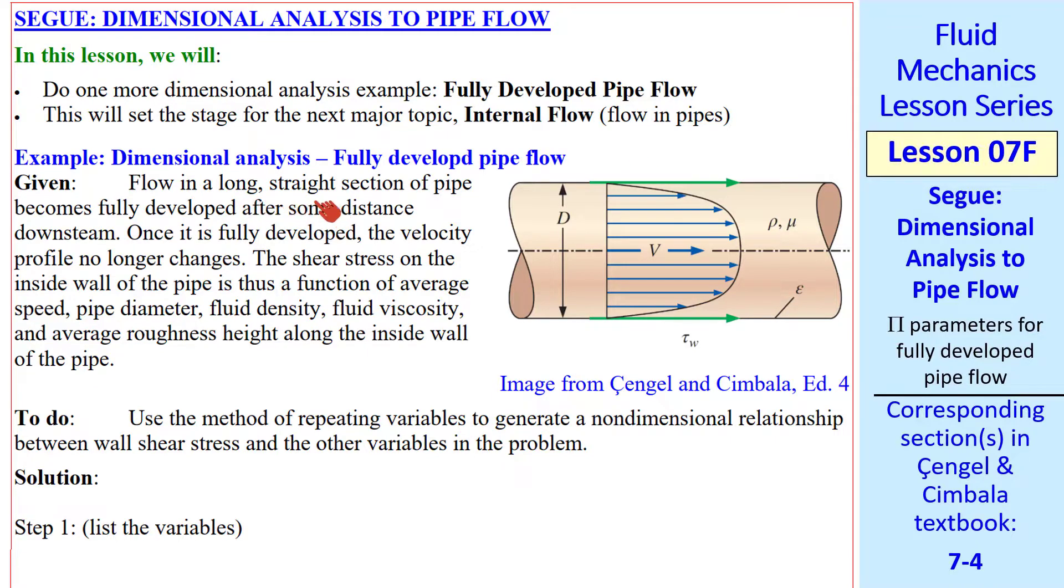Here's the problem set up. We're given a long straight section of pipe that's fully developed after some distance downstream. Once it's fully developed, this velocity profile stays the same from then on downstream. Shear stress tau w on the wall is thus a function only of average speed v, pipe diameter d, fluid properties rho and mu, and also the roughness of the pipe. Epsilon is the average roughness height of the inside of the pipe wall. It's a length.